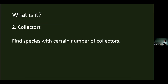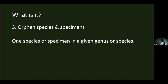Finally, the third analysis looks at taxonomic organization. If you've got a species with only one specimen, or a genus with only one species, it may just be a rare species, but it might be that the name is incorrect. It's just a good way of auditing the data. You can run all of these analyses separately or all together.